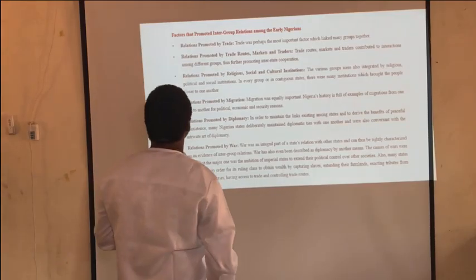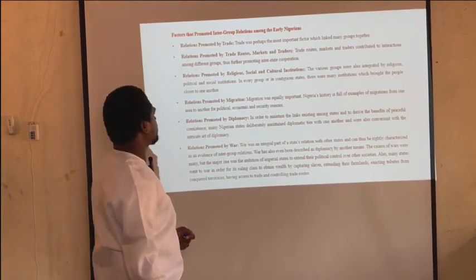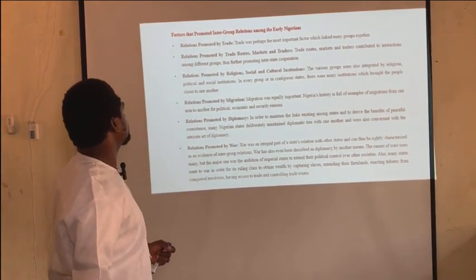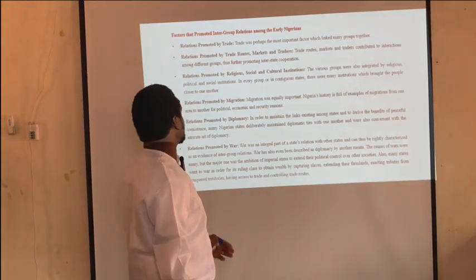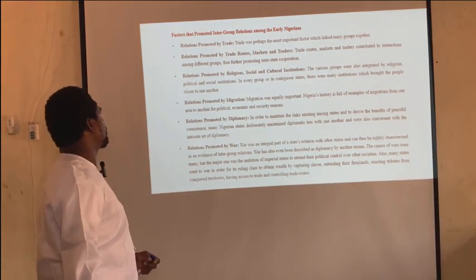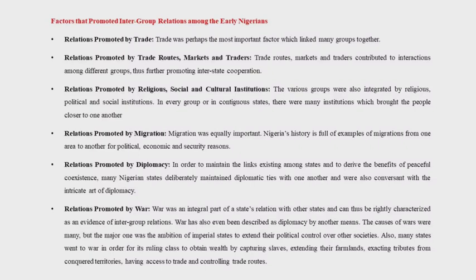The next thing we are going to consider is the factors that promoted intergroup relations among early Nigerians. Number one is relations promoted by trade. Trade was perhaps the most important factor which linked many groups together. Trade routes, markets, and traders also contributed to interactions among different groups, thus promoting intergroup relations.